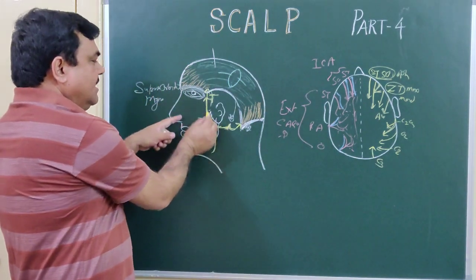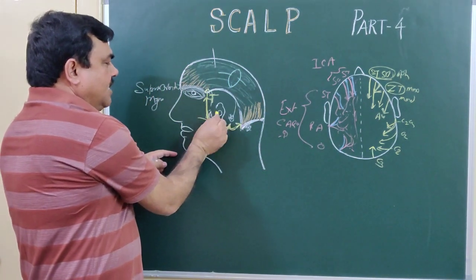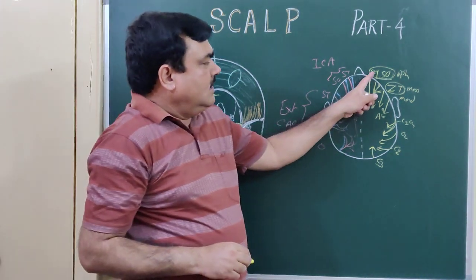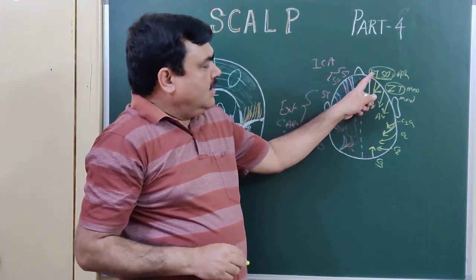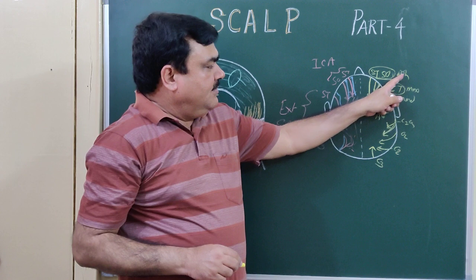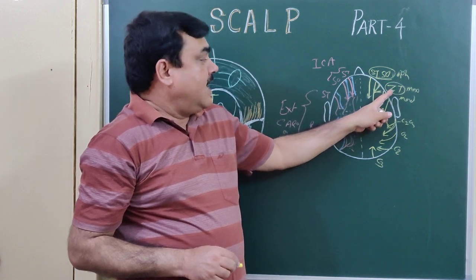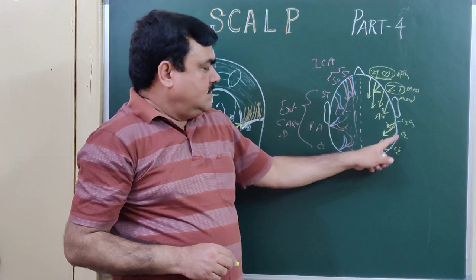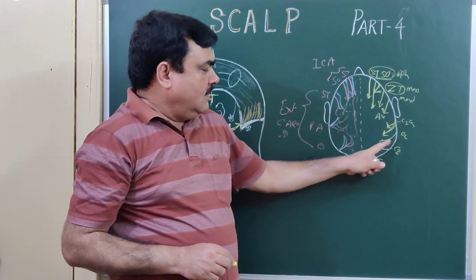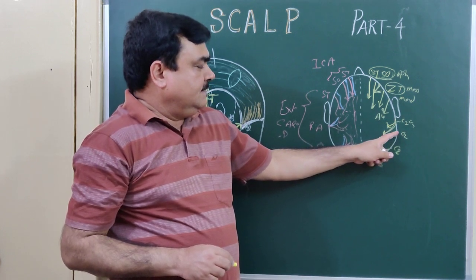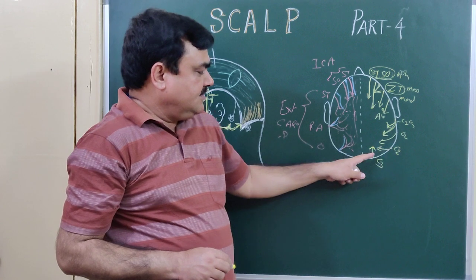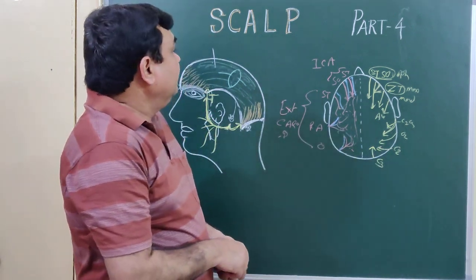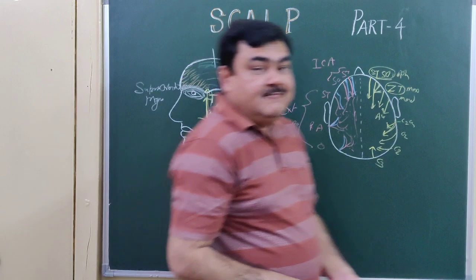So, in summary, the motor supply is by two branches of the facial nerve — the posterior auricular and the temporal branch — and the rest are sensory branches. This is all about the scalp part 4. Thank you.